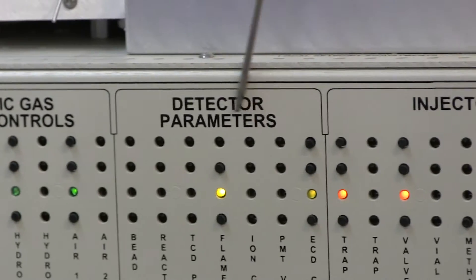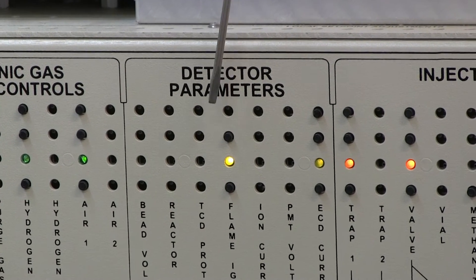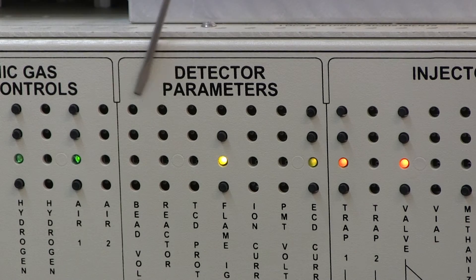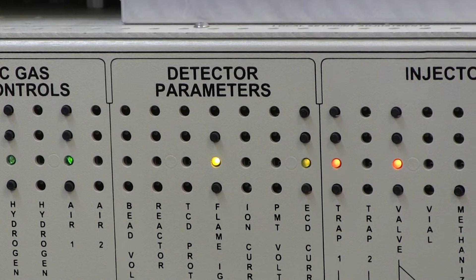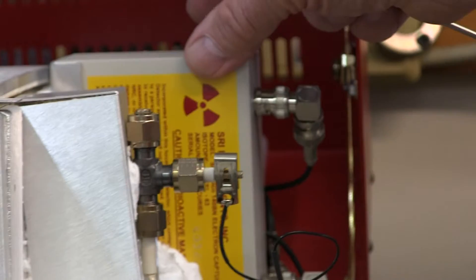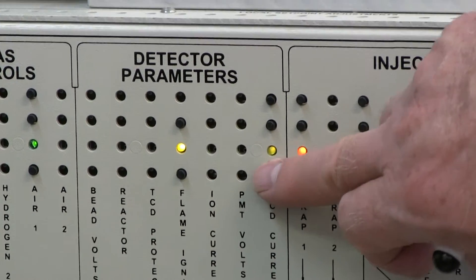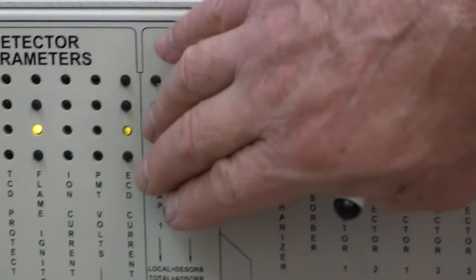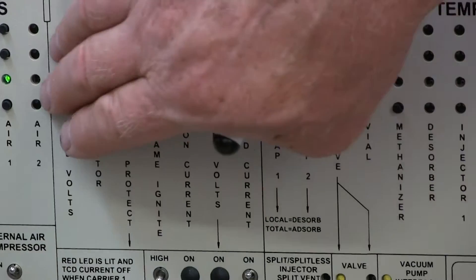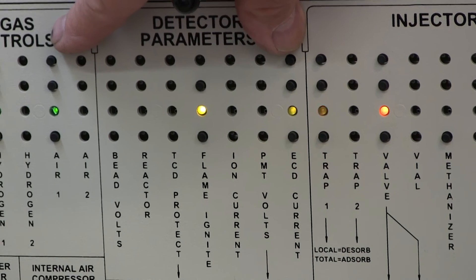Then we have a section here called detector parameters. Depending on which detectors you have, there may be buttons if that detector is installed, or there may not be. This particular GC is equipped with an FID detector and an electron capture detector. These two buttons control the igniter voltage for the FID detector. These three buttons control the current for the electron capture detector. We make 16 kinds of detectors, so there will always be some kind of detector parameter control in this area.